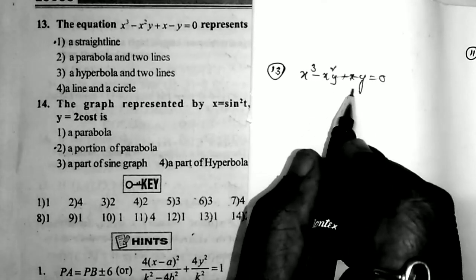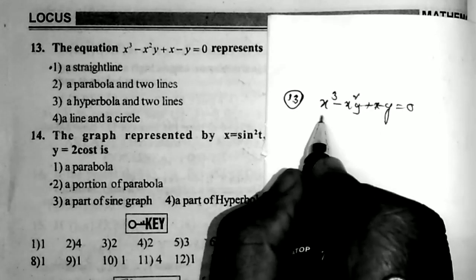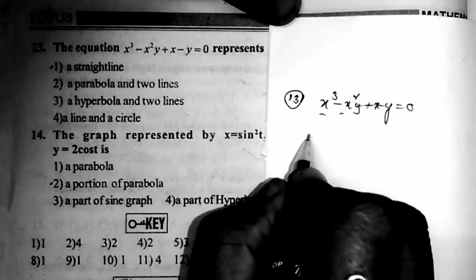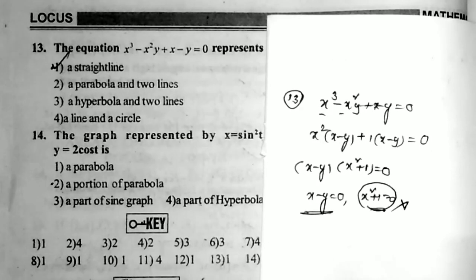Problem 13: the equation x³ - x²y + x - y = 0 represents what curve? Taking x² common from the first two terms: x²(x - y) + 1(x - y) = 0. Factoring (x - y): (x - y)(x² + 1) = 0. Since x² + 1 = 0 has no real roots (imaginary), x - y = 0 represents a straight line.